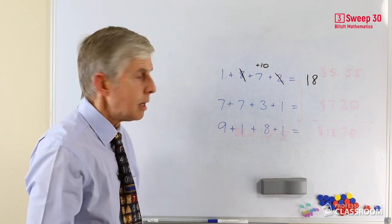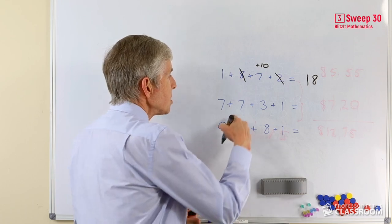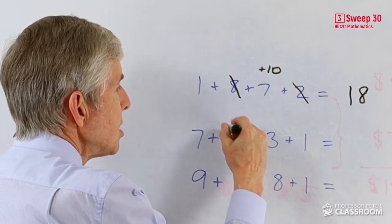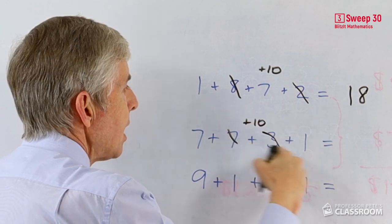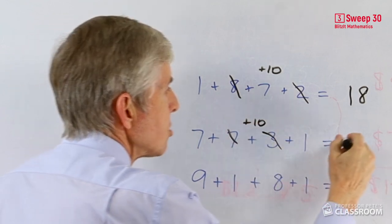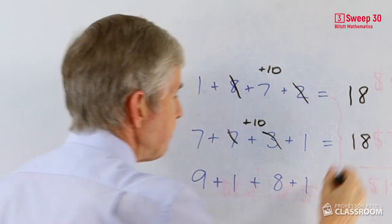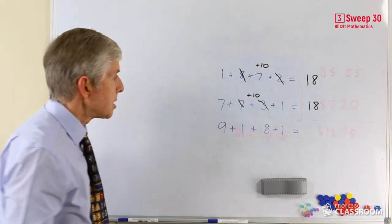7 plus 7 plus 3 plus 1. Clearly 7 and 3 make 10. 7 and 1 is 8, plus 10, that's also 18.